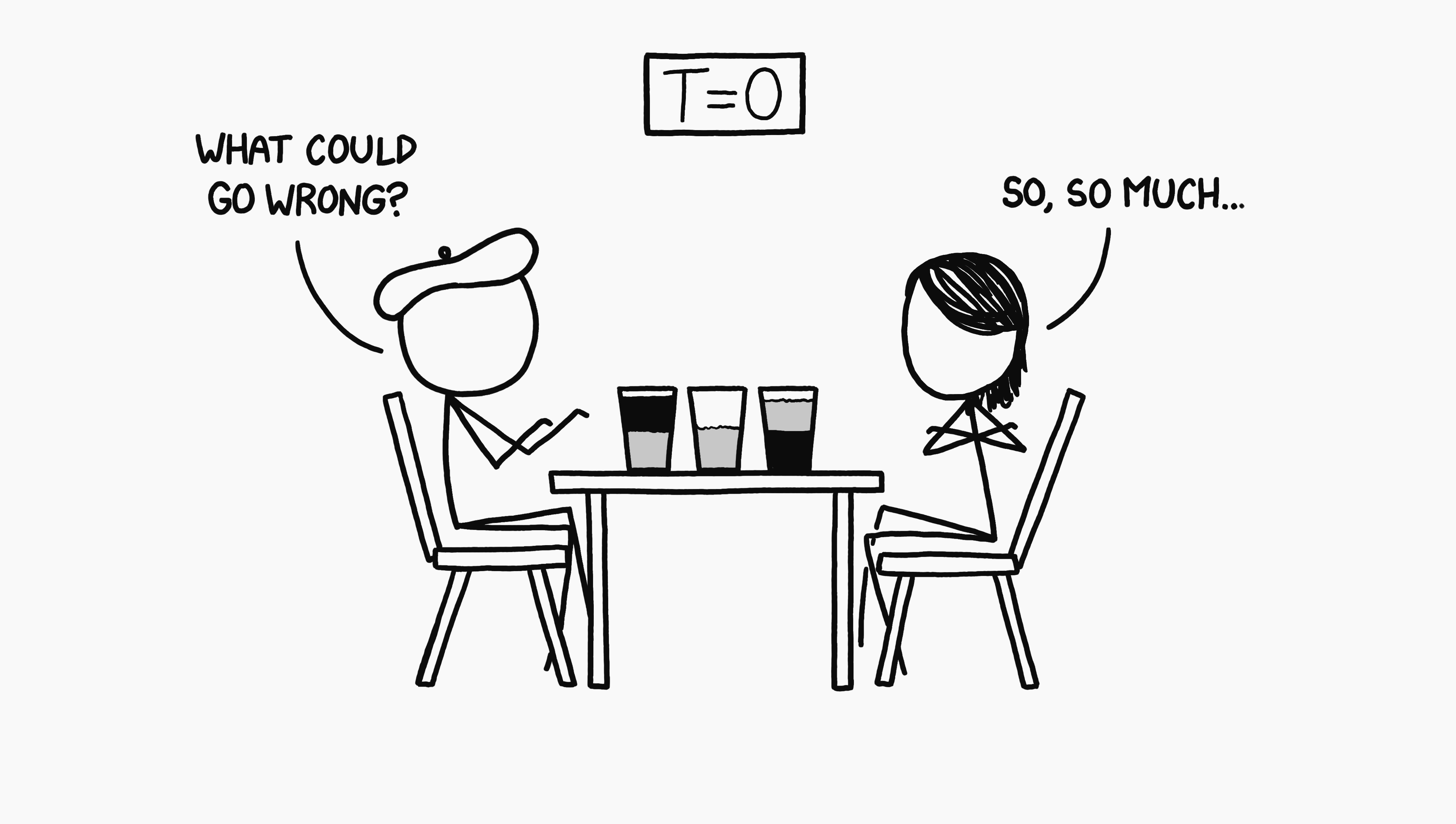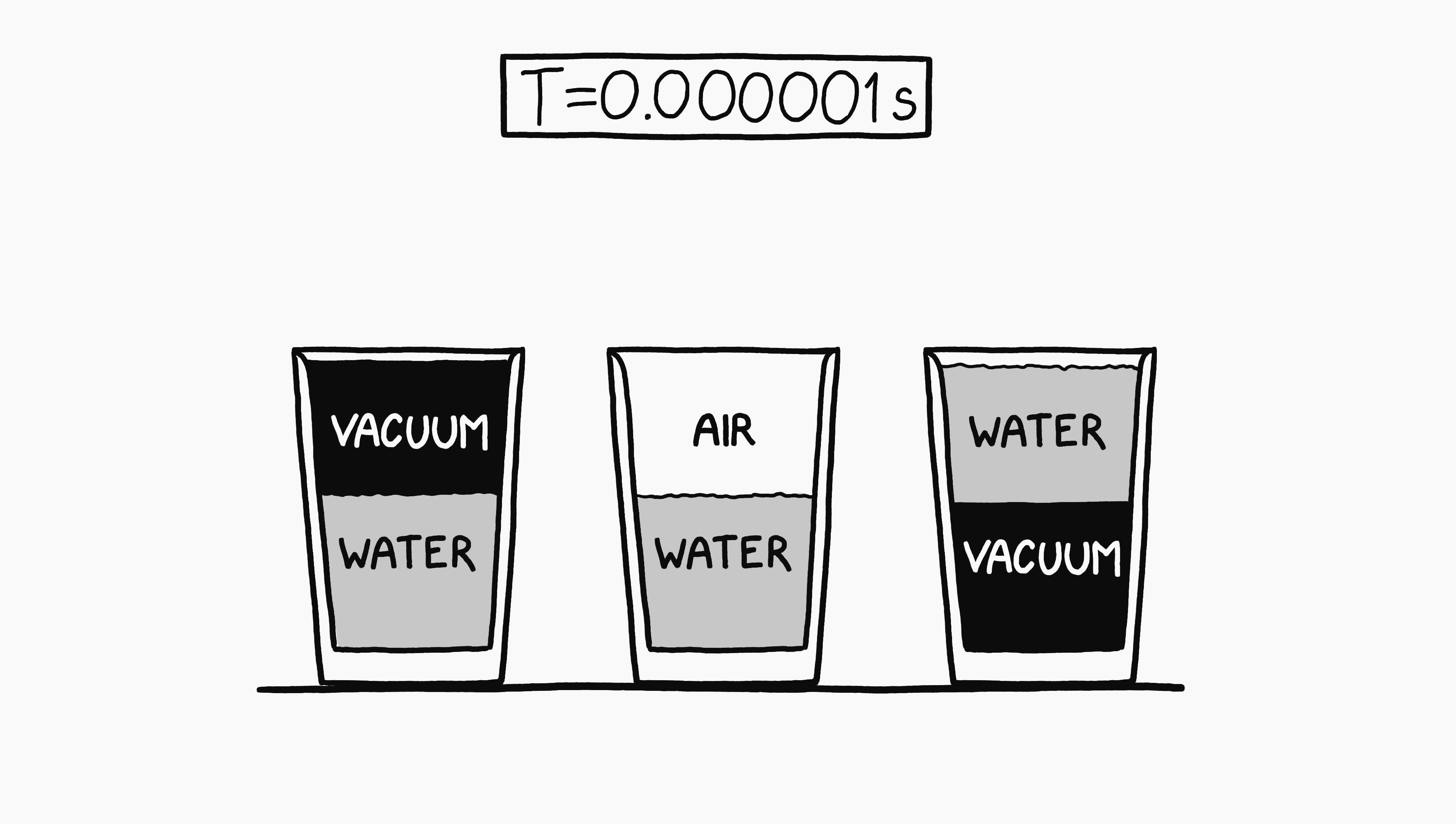We'll imagine the vacuums appear at time t equals zero. For the first handful of microseconds, nothing happens. On this timescale, even the air molecules are nearly stationary. For the most part, air molecules jiggle around at speeds of a few hundred meters per second, but at any given time, some of them happen to be moving faster than others.